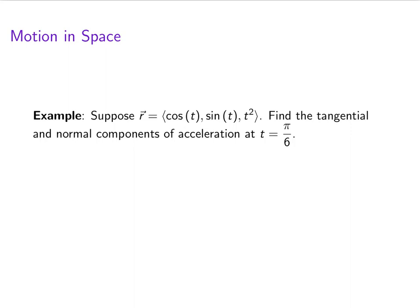Hello calculus fans! Let's say we've got a space curve defined by cosine t, sine t, t squared. Let's find the tangential and normal components of acceleration at t equals pi over 6.